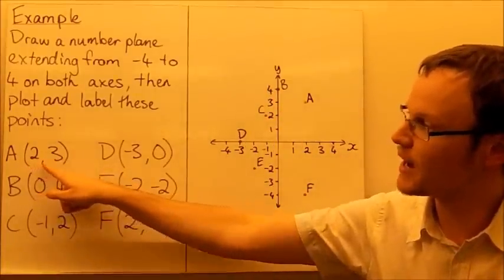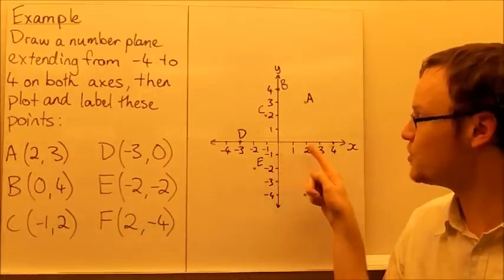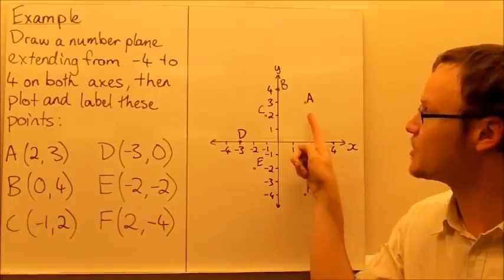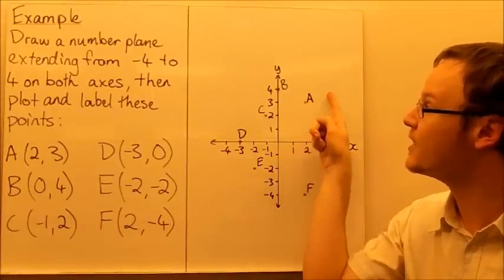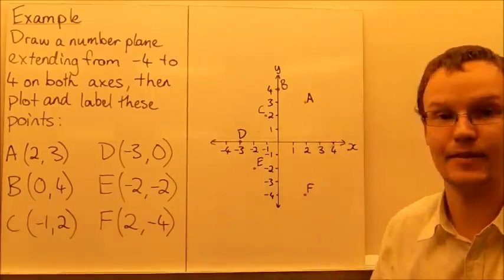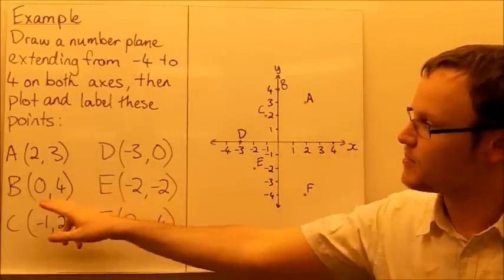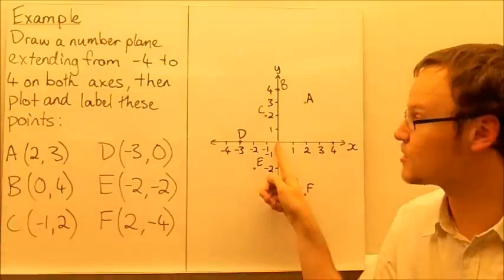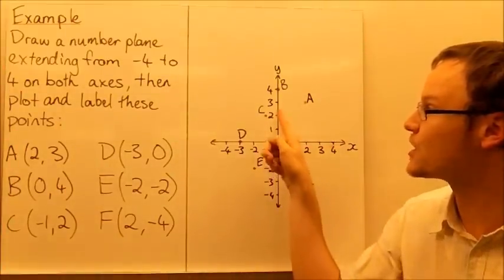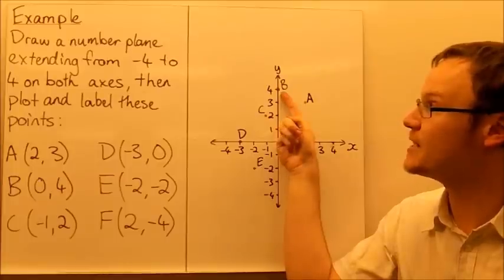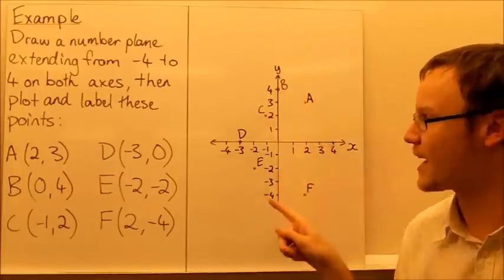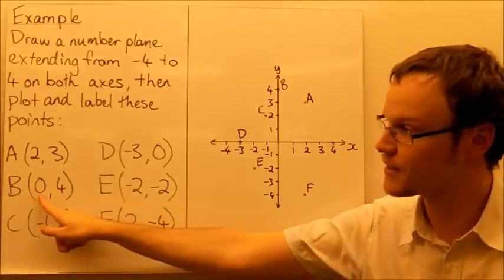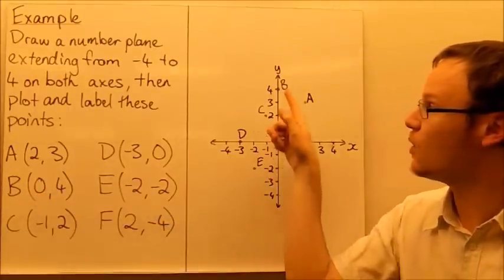So firstly we're asked to plot A, which is point (2,3), so two points along on the x-axis, on the horizontal axis, and then three points upward, and we've plotted A. We've labeled it with an A where we've put our dot. The next one, B, is (0,4). So we move zero places on the x-axis, horizontally, and then four vertically, 1, 2, 3, 4. So we can see point B is on the y-axis here, because we haven't moved off it, plus or minus for the x value here. We've stayed on the y-axis.